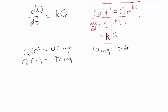Well, if we can find C and k, we know the equation of how much of this isotope there is. So we just set it equal to 10 and solve for t.